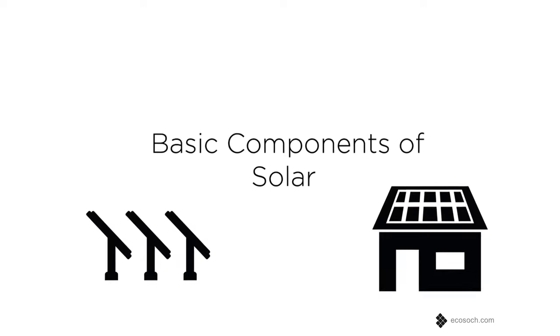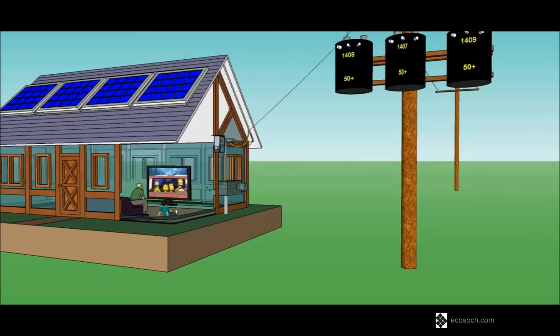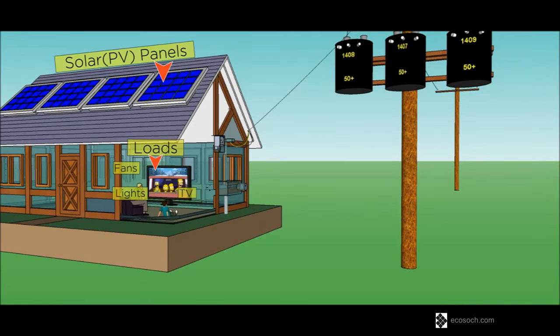A grid connected solar system generally has four basic components: the solar or photovoltaic panels, the loads like TV, fan, AC, the solar inverter, and the grid or the main power supply.